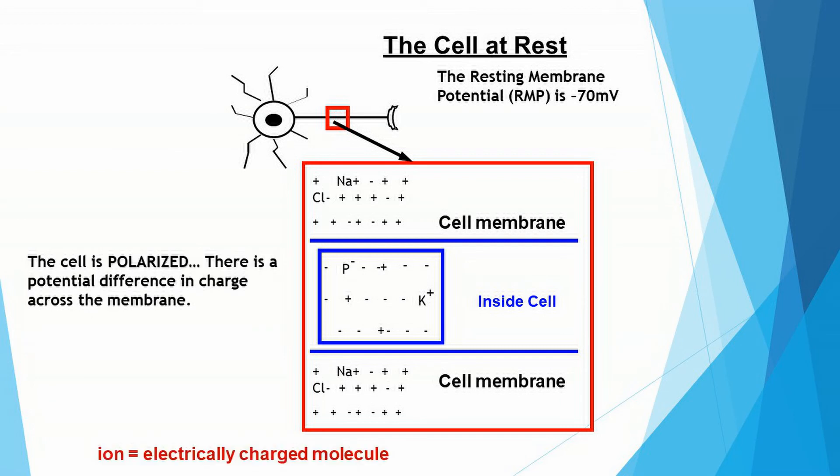And here is how I want you to think about the neuron or the cell at rest. The cell is polarized. There is a potential difference in charge across the membrane. It's more negative inside than outside of the cell. Think about a battery. You've got a negative pole and a positive pole and it is ready and waiting to do some work.